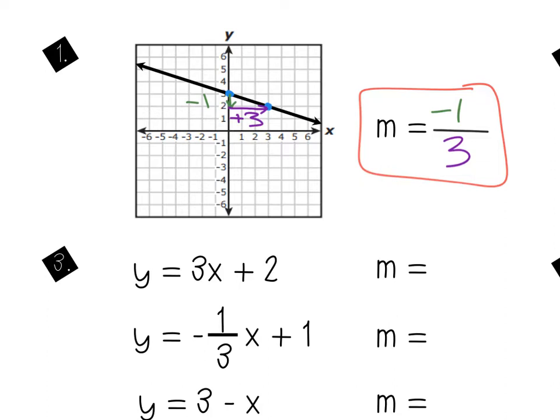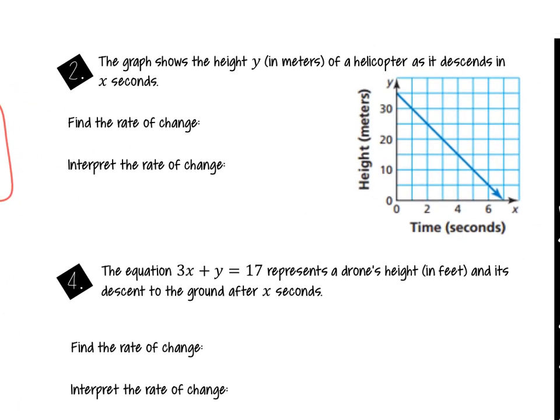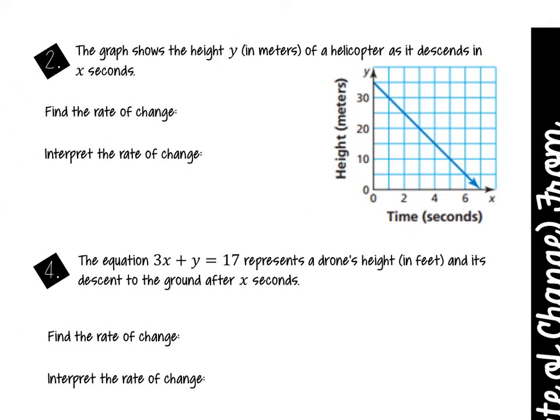We're going to put it in real world context, which is where it gets really cool. Scoot over to number two — the question about the helicopter. The graph shows the height in meters of a helicopter as it descends x seconds. What does 'descend' mean? Go down. So our helicopter is landing. Let's look at this graph — it looks like it's landing because it's going down. What type of slope should I have here? A negative slope, because it's going downwards.